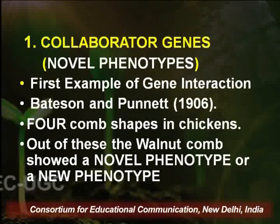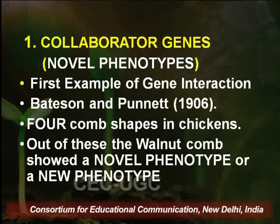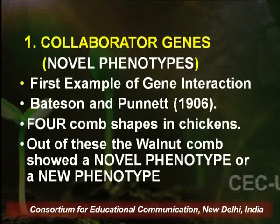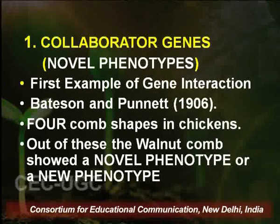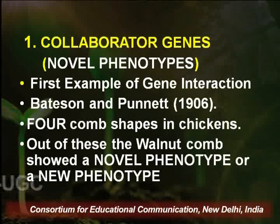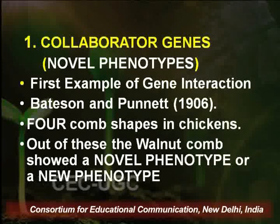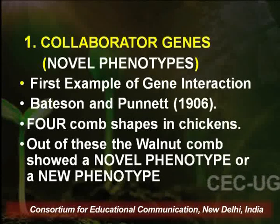Let us take the first example, where a new or novel phenotype comes into existence. This is what is called collaborator genes, and this is what Professor Bateson and Punnett worked upon when they were supporting Mendel's ideas and yet found exceptions, and tried to fit them into Mendelian principles. They found out that there are some genes which at the end of their crosses show four phenotypic classes, but a new phenotype is being generated — and therefore this is what is called collaborator genes. The best example is the comb shape in poultry.